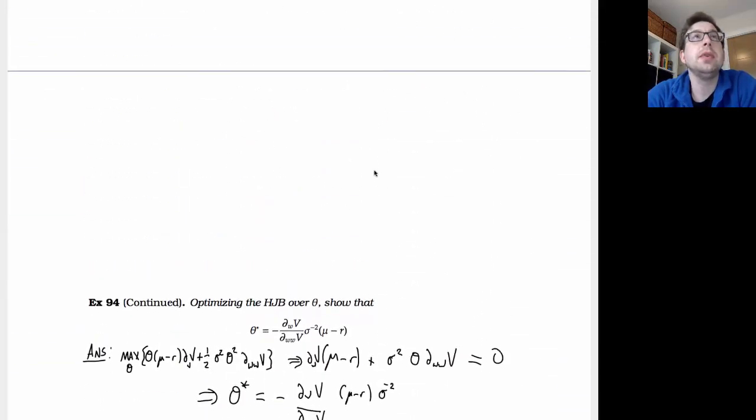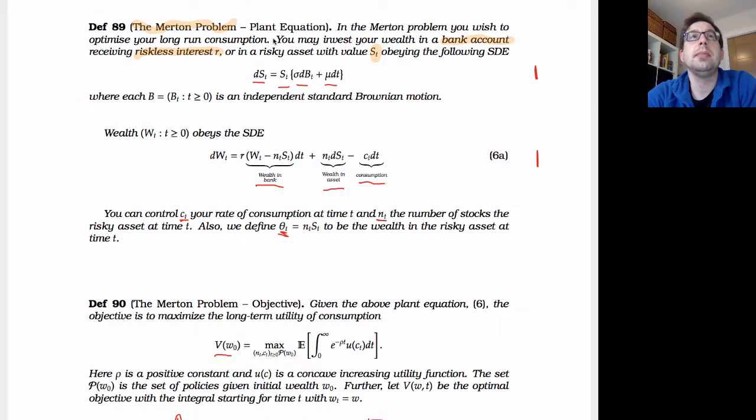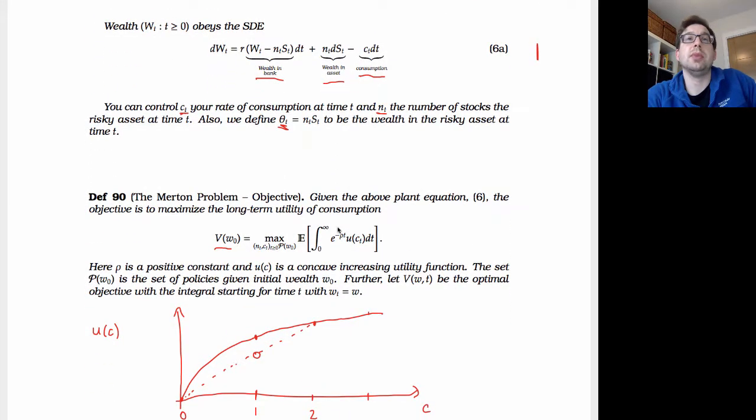We've covered Merton and portfolio optimization, so we'll just quickly recall that. We defined a problem where we've got a stock that evolves according to a geometric Brownian motion, and a bank account that gives us a fixed interest rate R. We can either save money in the bank account and receive an interest of R, or we can invest in buying N_T stocks, or a total wealth of theta in these stocks. From that we can consume some amount C of T. The Merton problem considers we want to maximize the utility of our consumption. We end up with this objective where we discount over time the utility of our consumption.